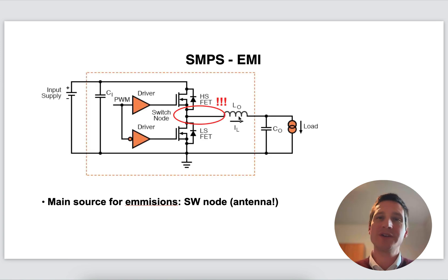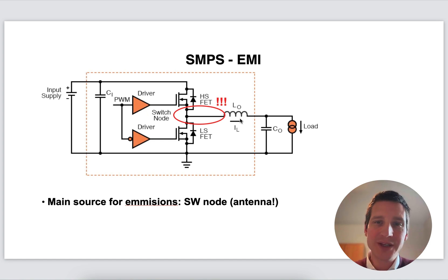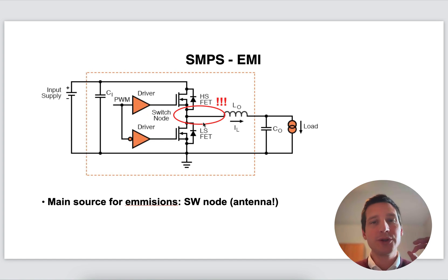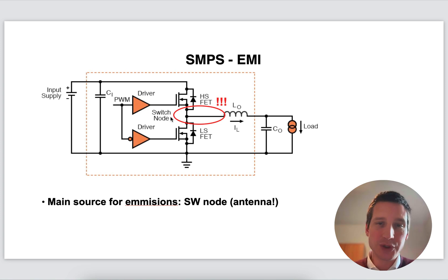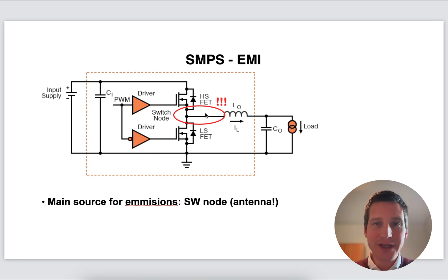What you have is an inductor — that is a wire, to put it very simply, a wire that is made into a coil. So basically it's an antenna, and you're going to excite that antenna very quickly and with high voltages. So this switching node is the one to watch out for in your switched mode power supply system — here is the main source of EMI.